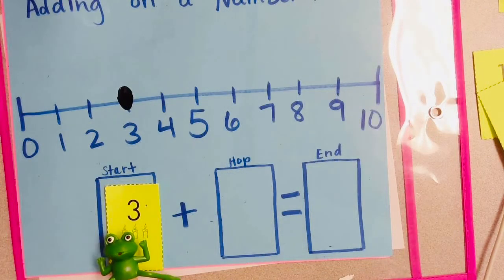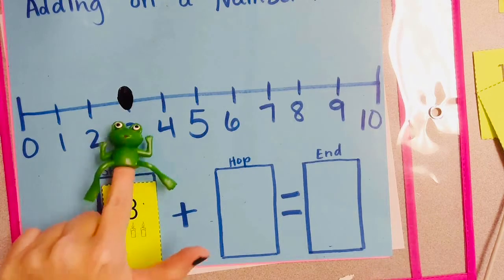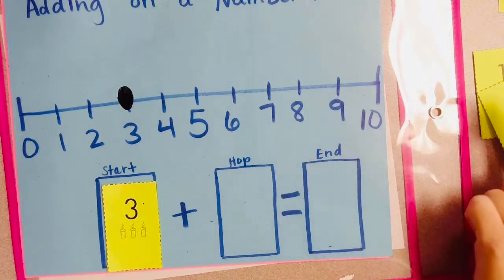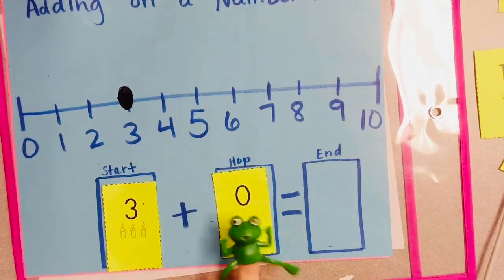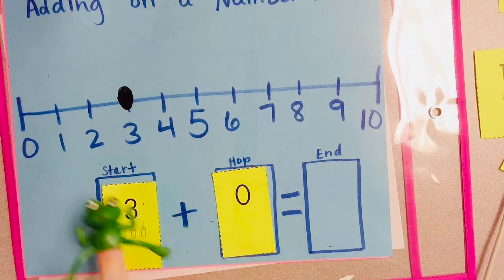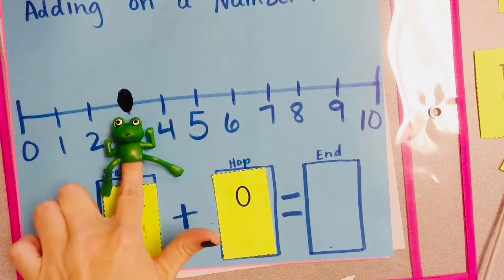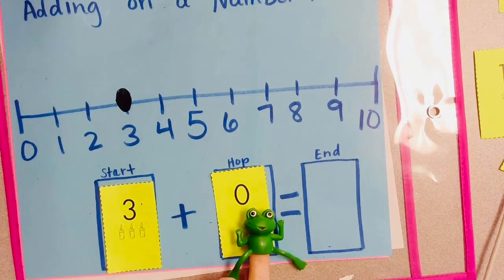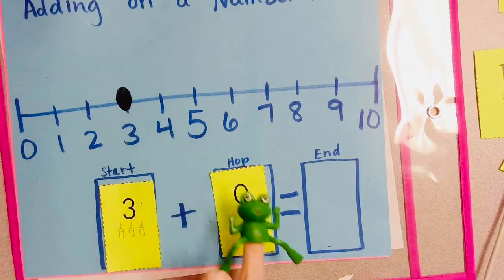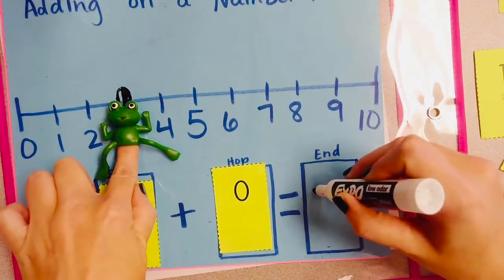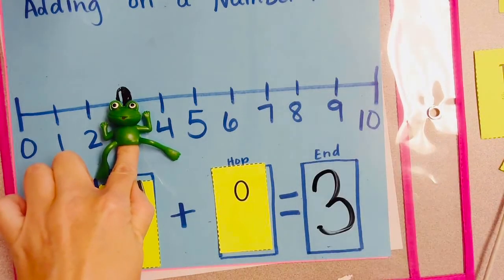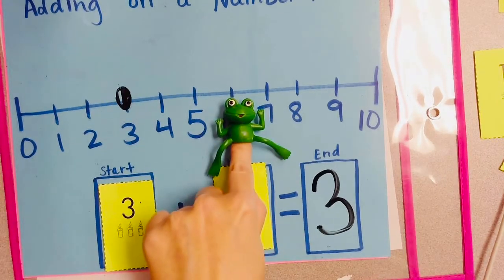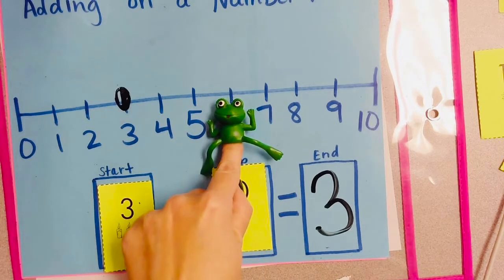This time Mr. Frog has chosen 3 as our starting number, but he has a little joke for you. What if we add 0? How many hops would he make? None. 3 plus 0 hops. We didn't change the number. He's still on 3. Whenever you add 0 to a number, the frog doesn't hop. The number stays the same. It doesn't change.